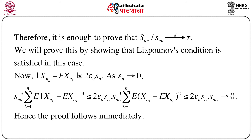Note that |X_{nk} - E[X_{nk}]| ≤ 2ε_n s_n. As ε_n → 0, s_{nn}^{-3} Σ_{k=1}^{n} E[|X_{nk} - E[X_{nk}]|³] ≤ 2ε_n s_n · s_{nn}^{-1}, which goes to 0 as n → ∞.